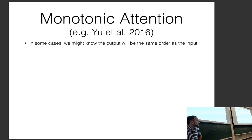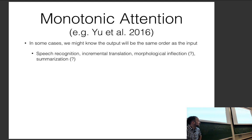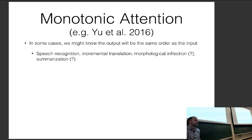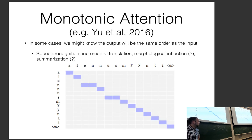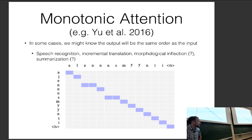Monotonic attention is useful when the output is in the same order as the input — as in speech recognition, incremental translation, morphological inflection, and summarization. These methods enforce that each attention step must attend to something at or after where the previous step attended, providing a useful inductive bias for tasks without reordering.